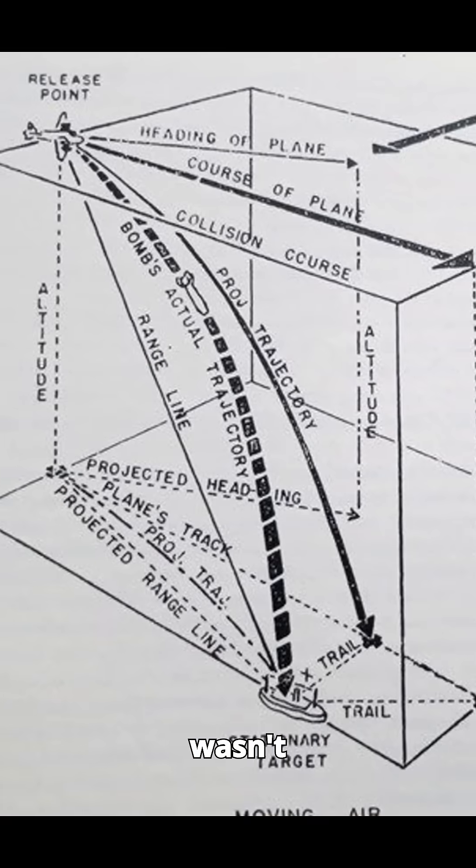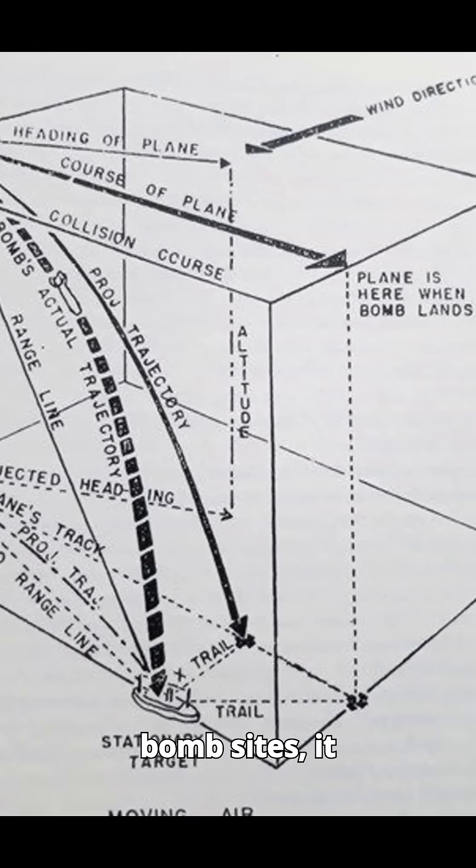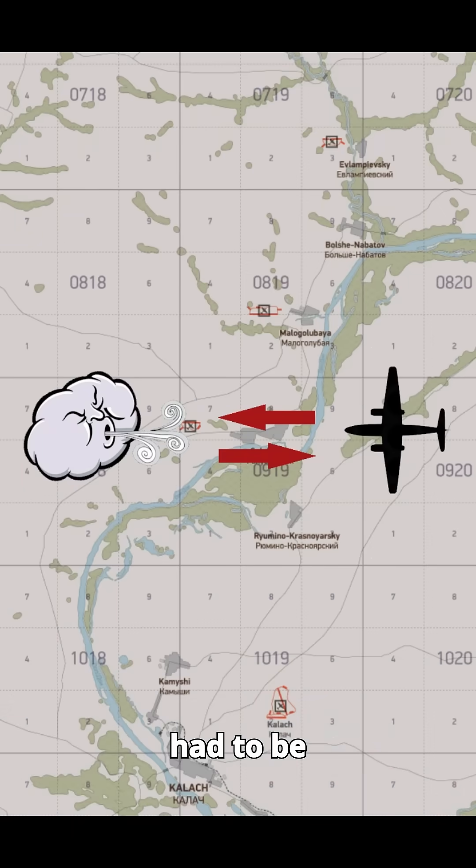But the system wasn't perfect. Unlike regular bomb sites, it couldn't correct for crosswinds, so attack runs had to be flown directly into or with the wind.